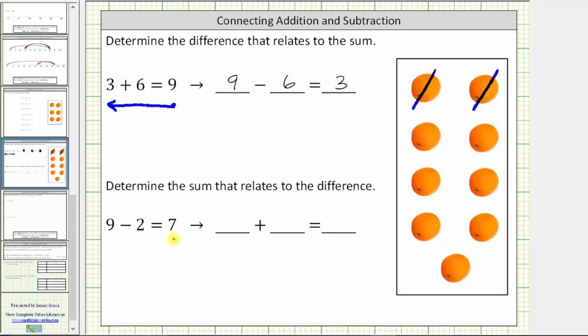To write the sum that relates to this difference, we begin with the difference of seven. For the subtraction problem, we subtracted two, which means for the addition problem, we add two.